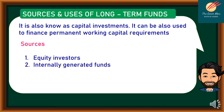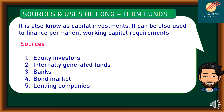Number two is internally generated funds. Instead of declaring cash dividends, the company can use internally generated funds for expansion or to finance other types of capital investment. Number three, banks. Banks are sources of different types of financing from short-term to long-term, and they provide lower interest rates compared to other financial institutions, but have many requirements and a process that normally takes one to three months before a loan gets approved. Number four, bond market — gaining more popularity among big publicly listed companies. And finally, lending companies, which also provide long-term loans ranging from two to five years.